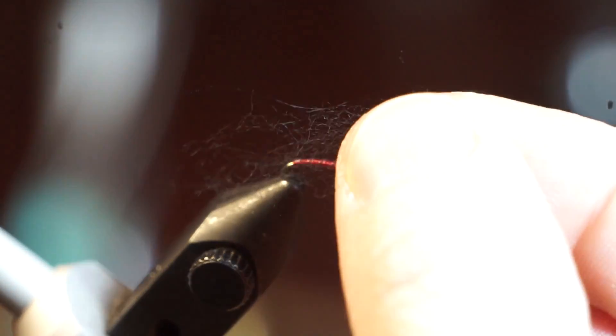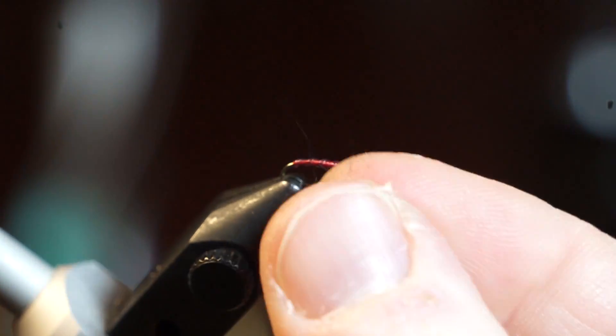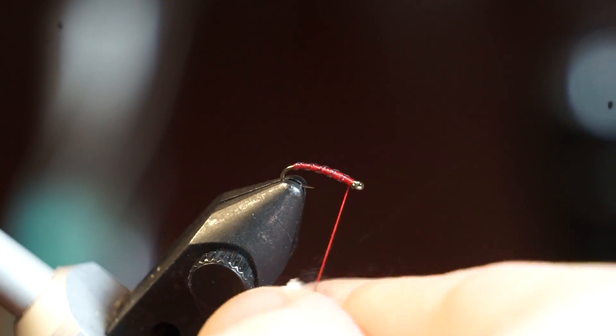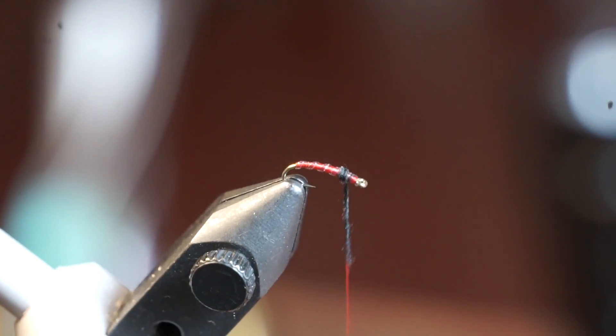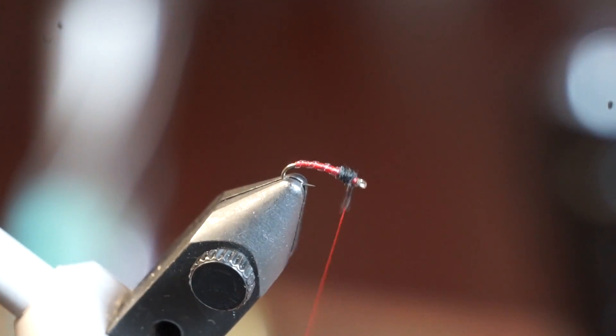Now take a bit of black superfine dubbing, and I break this in half to make the fiber shorter, which is easier to dub in. Then start dubbing tightly onto your thread. Then start wrapping your dubbing around the hook evenly, creating a small dubbing ball for a black head on the fly.